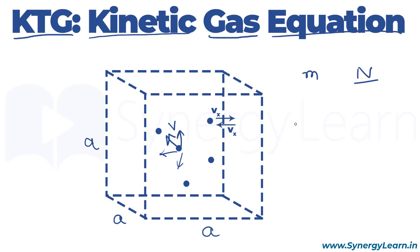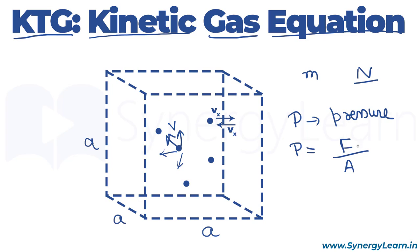The pressure of the gas is force per unit area exerted by the gas molecules on the wall of the container. We will first find the force exerted by the molecules on the wall, or equivalently, the force exerted by the wall on all the molecules striking it.